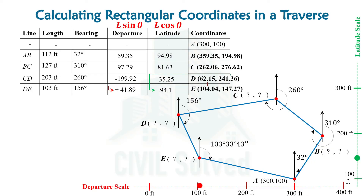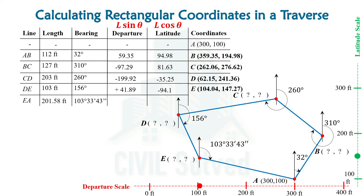Now we have calculated the coordinates of all unknown points. Still, we can move further because this is a closed traverse, so we can move further to the EA line. The length and bearing of the EA line is given, with the help of which we can calculate the departure and latitude.